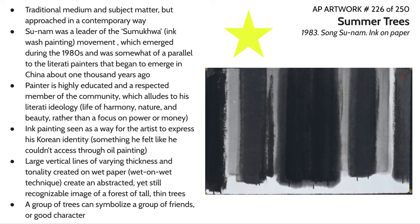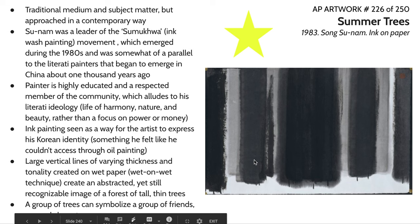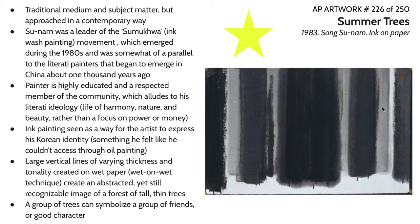A group of trees can symbolize a group of friends, good character, or stability. The piece is extremely balanced, simple, and serene — almost reminiscent of a forest in wintertime. There's also a sense of space being created: some trees in the foreground are larger and darker, while the lighter strokes in the background suggest more trees extending backward into the forest.